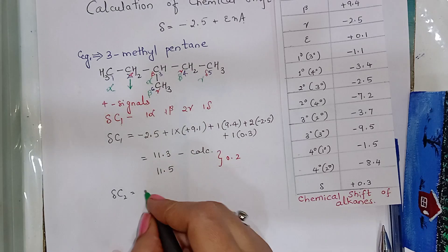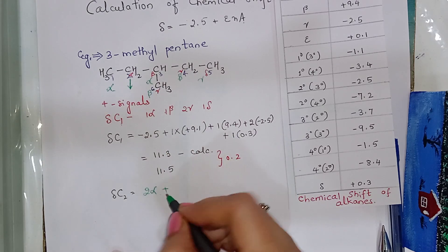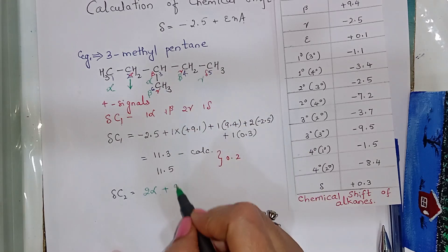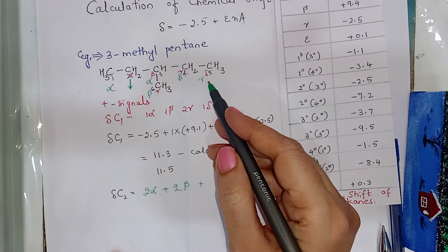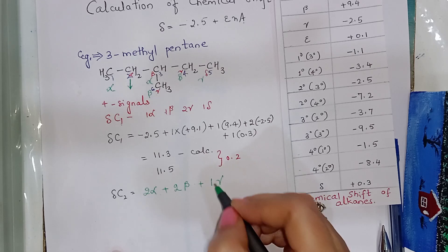1, 2, 2 alpha plus 1, 2, 2 beta plus 1 gamma carbon.